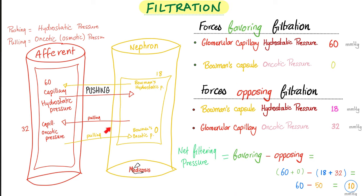Because all of these are pressures, let's review: two forces favor filtration — glomerular capillary hydrostatic pressure (60) and Bowman's oncotic pressure (zero, since there's no albumin in kidney tubules). Two forces oppose filtration — Bowman's capsule hydrostatic pressure (18) and glomerular capillary oncotic pressure (32). Favoring: 60 + 0 = 60. Opposing: 18 + 32 = 50. Net filtration pressure: 60 − 50 = 10 millimeters of mercury. Translation: fluid is moving from your capillaries to your tubules — that is the net filtration pressure.